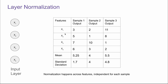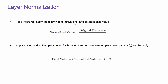Layer normalization is very popular for sequential datasets. Using the same example of a four-neuron input layer representing four features, when we calculate mean and standard deviation this time, it happens across features and is independent for each sample. So we get the mean and standard deviation of all features for the first sample, the second sample, and the third sample separately. In this way, we don't have to do padding at all. We apply the same normalization formula and then apply scaling and shifting similar to batch normalization. So this is layer normalization.